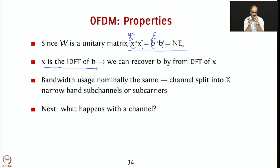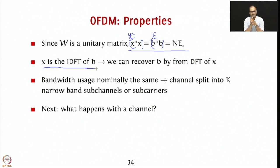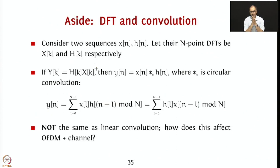Of course, there are some issues — you don't know what happens when there is noise, and you don't know what happens when there is a channel. That is something we will see. The bandwidth usage is nominally the same, with the channel split into K or N narrow-band sub-channels or sub-carriers. Now let us see what happens when we have a channel, which involves convolution and noise addition.